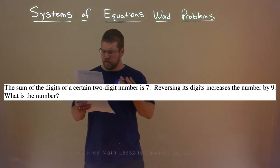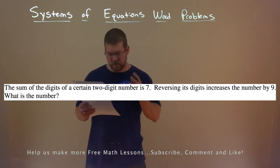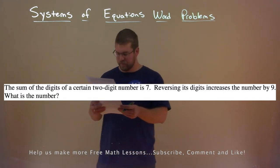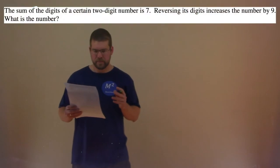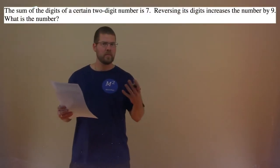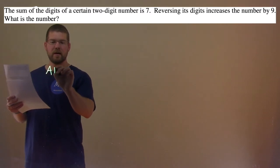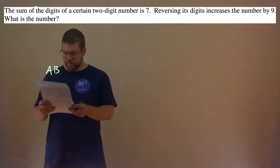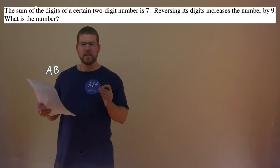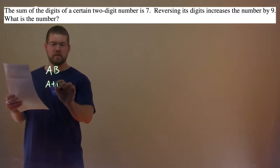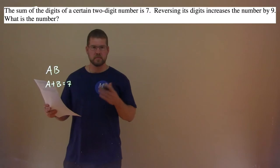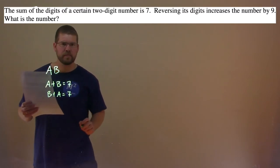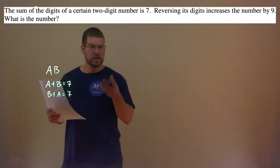We're given this problem: the sum of the digits of a certain two-digit number is 7. Reversing its digits increases the number by 9. What is the number? It's a two-digit number, so let's say this number is some two digits A, B — like 13 would be 1, 3. They tell us the sum of the digits, so A plus B equals 7. And from our rules of addition, B plus A is also equal to 7.